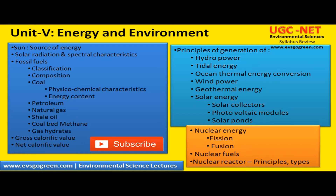Unit 5 is about energy and the environment. We have to start with the sun as the source of energy, then the concept of solar radiation and spectral characteristics — meaning the electromagnetic spectrum of radiations coming from the sun. Then you have to learn about fossil fuels, how they are classified and composed. Particularly in detail, you have to learn about coal and its physiochemical characteristics and energy content.